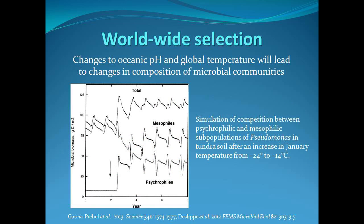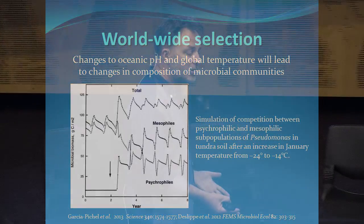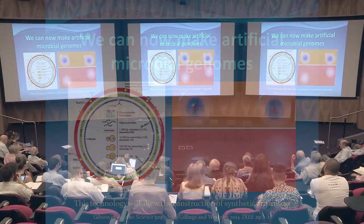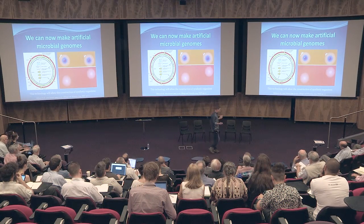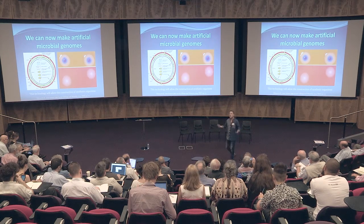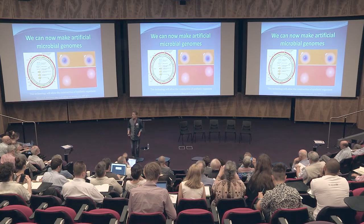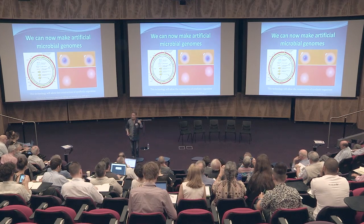We will also be responsible for worldwide selection events. Ocean acidification and global temperature changes select for organisms that do better at lower pH and higher temperatures - microorganisms will cope just fine given their generation times and population numbers. And finally, we can now make completely artificial microorganisms - the first was announced in 2010. We can DNA sequence entire organisms, store those sequences digitally, transmit them anywhere on the planet, synthesize them, and insert the result back into a cell.